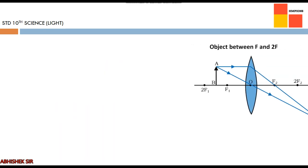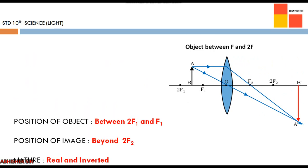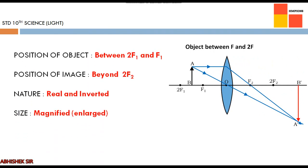Fourth case — object placed between 2f1 and f1: the image is formed beyond 2f2 on the other side, nature is real and inverted, and the size is magnified — larger than the object.